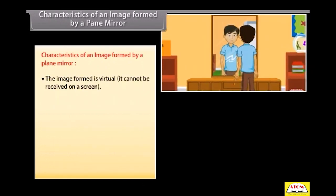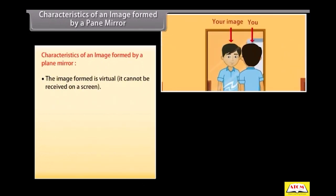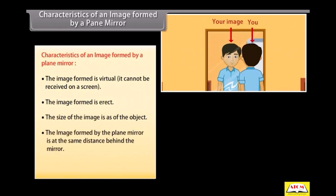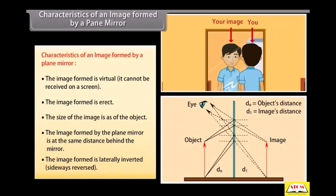Characteristics of an image formed by a plane mirror. The image formed is virtual, it cannot be received on a screen. The image formed is erect. The size of the image is the same as the object. The image formed by the plane mirror is at the same distance behind the mirror. The image formed is laterally inverted, sideways reversed.